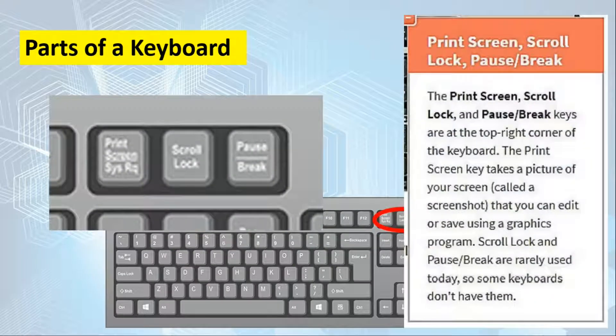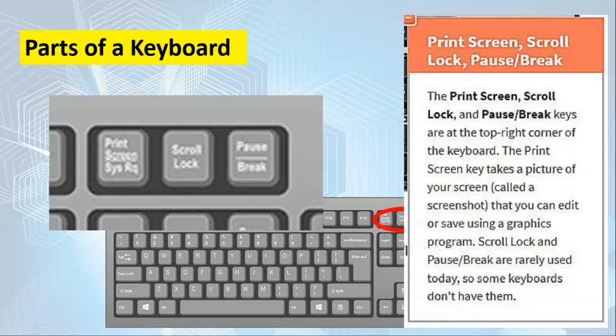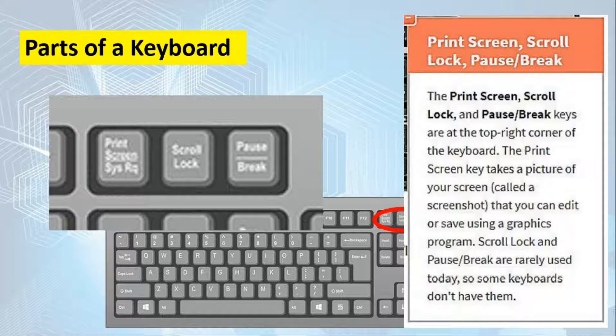Next is the print screen, scroll lock, and pause or break. These three keys are located at the top right corner of your keyboard. The print screen takes a picture of your screen called a screenshot that you can edit or save using a graphics program. Scroll lock and pause break are rarely used today, so some keyboards don't have them now.